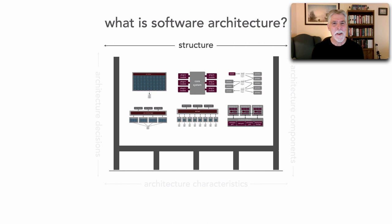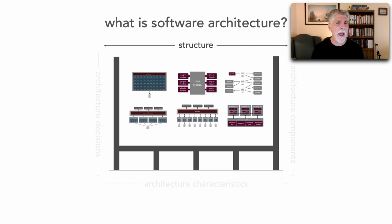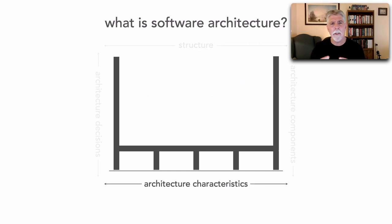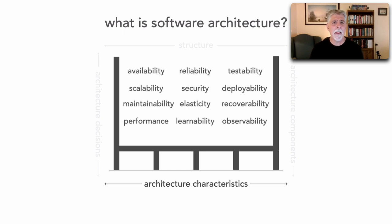Now it's kind of interesting because the other dimensions are required to really define what software architecture is. Because if I were to ask you what your overall architecture looks like and you say 'we're using microservices,' you really haven't described your architecture — all you've described is the structure, the architecture style you're using. I still know nothing about your specific architecture.